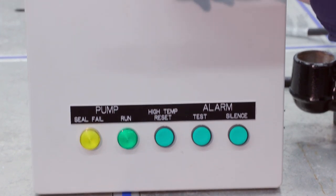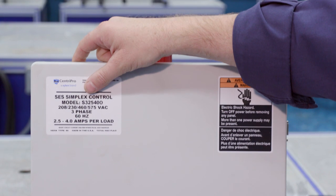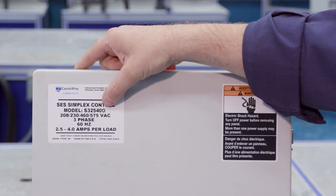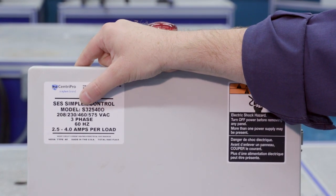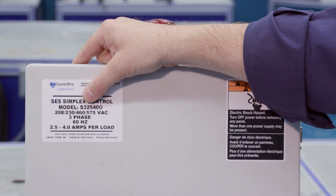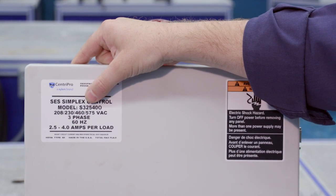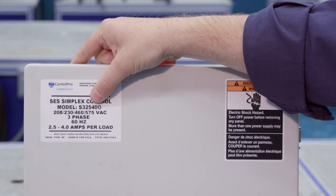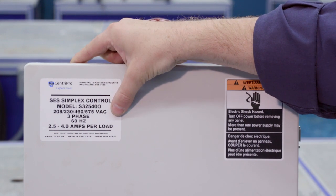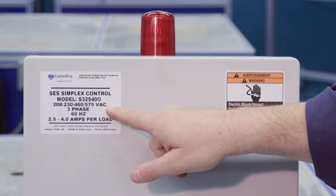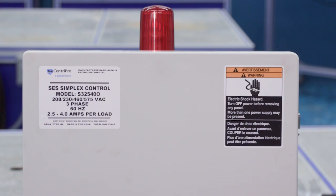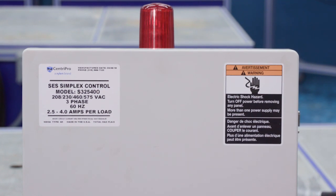As we move up to the nomenclature here, model S325400. That's a simplex, 3 for 3-phase, 2.5 to 4 amps, and again 3-phase. Important here is it's a multi-voltage panel: 208, 230, 460, 575, and we'll show how to make that setting inside the panel.